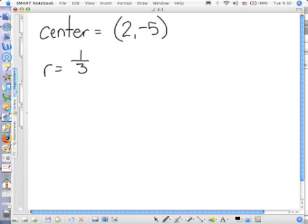Write the equation of this circle. If the center is 2, negative 5, and the radius is 1 third, just plug the parts in. Is there anything that needs to be figured out? No. Because to write the equation, you just need the center and the radius, and you already have it.